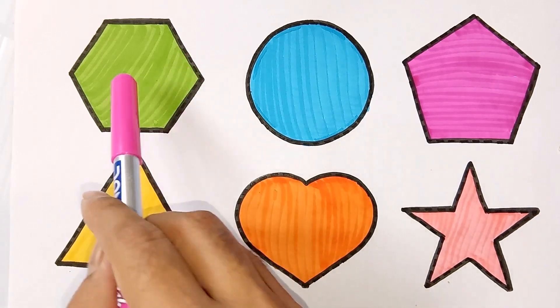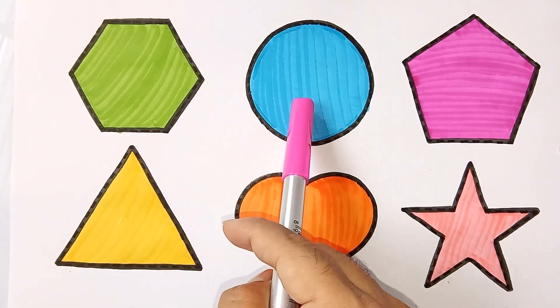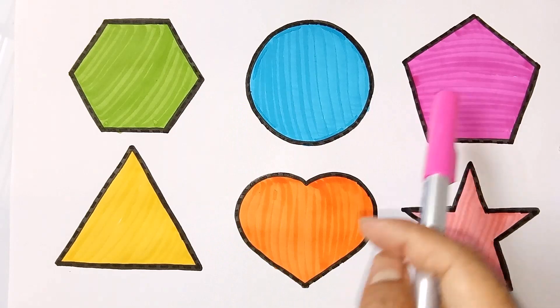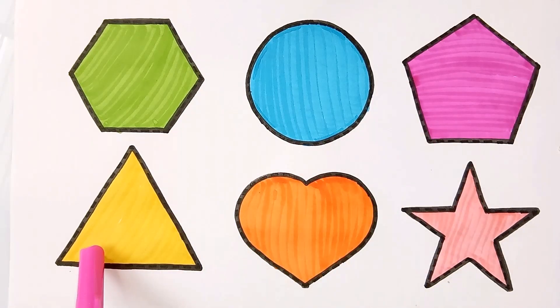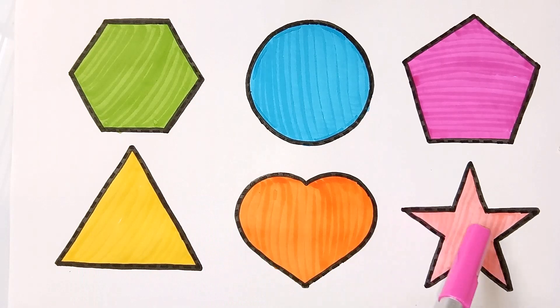Hexagon light green color, circle sky blue color, pentagon purple color, triangle yellow color, heart orange color, star pink color. If you like the video,